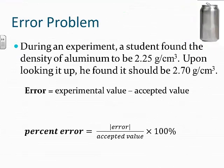Let's try an example. A student found the density of aluminum to be 2.25 g/cm³, but the accepted value is 2.70 g/cm³. The error is 2.25 minus 2.70, which equals negative 0.45 g/cm³. For percent error, we take the absolute value of negative 0.45, divide by 2.70, and multiply by 100%, giving us approximately 16.7%, which rounds to about 17%. So our percent error is 17%.